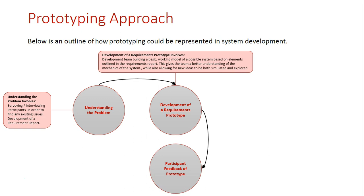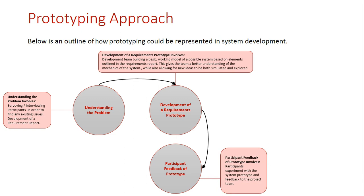Once they're happy with this prototype, they will then show it to the actual participants, who will give their feedback about it. The participants will experiment using the prototype and then give feedback to the team. The team will then receive this feedback and modify the prototype accordingly in order to make sure they're satisfying the participants' needs. This cycle would happen multiple times throughout development in order to perfect the system.